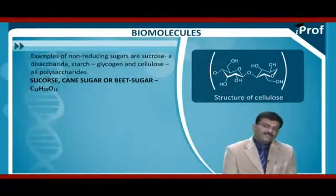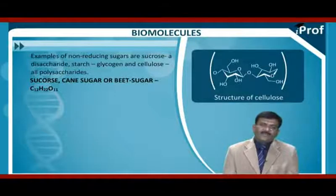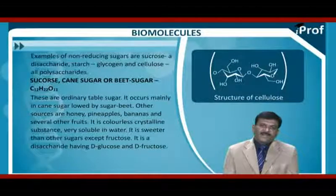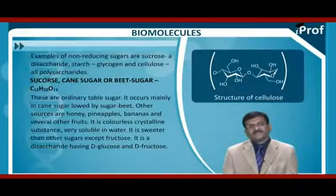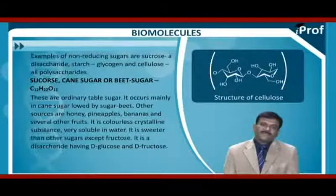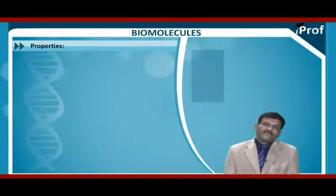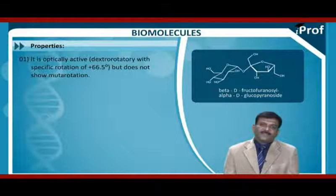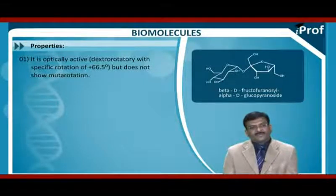Sucrose — cane sugar or beet sugar, C12H22O11 — is ordinary table sugar. It occurs mainly in cane sugar followed by sugar beet. Other sources are honey, pineapple, banana, and several other fruits. It is a colorless, crystalline substance, very soluble in water, and sweeter than other sugars except fructose. It is a disaccharide having D-glucose and D-fructose. It is optically active and dextrorotatory with a specific rotation of +66.5°, but does not show mutarotation.